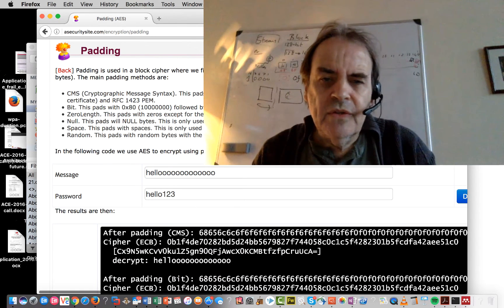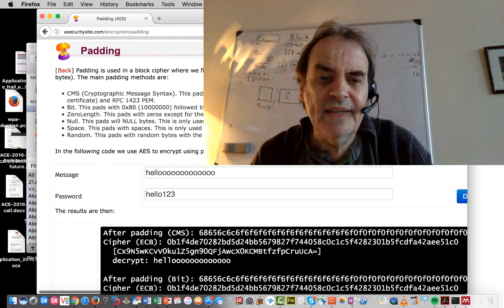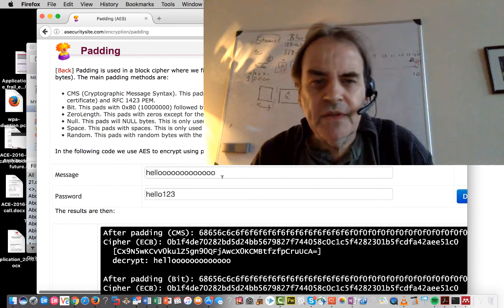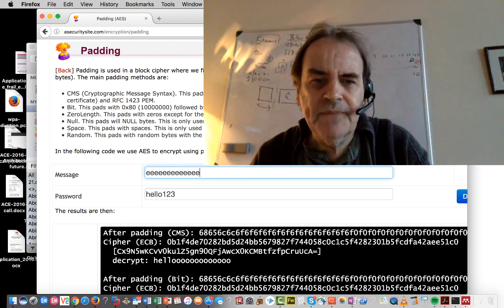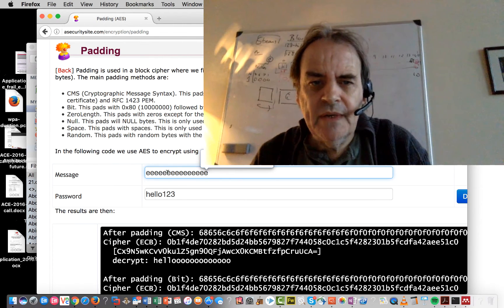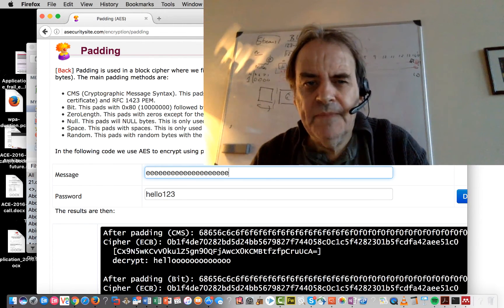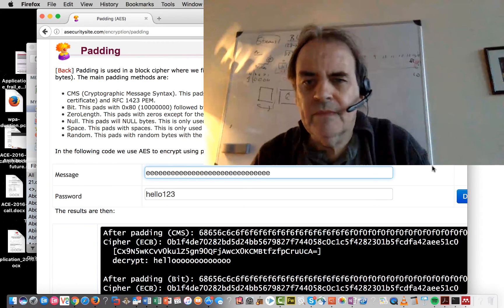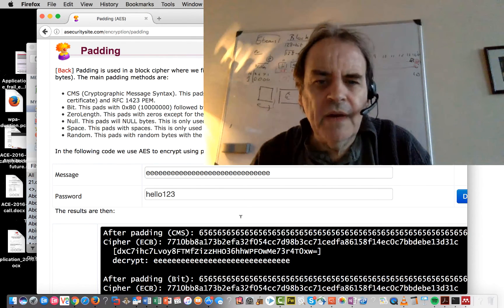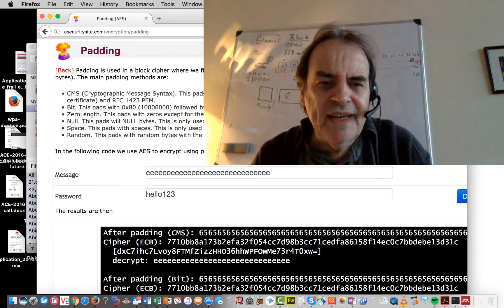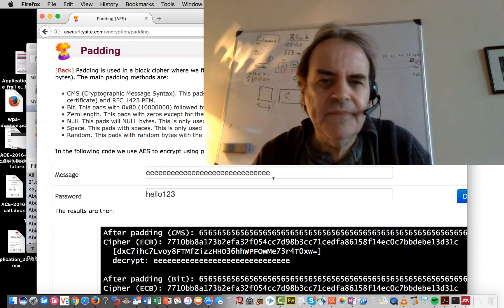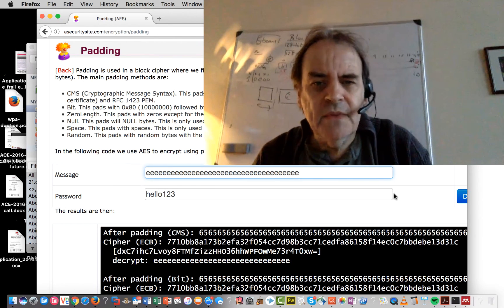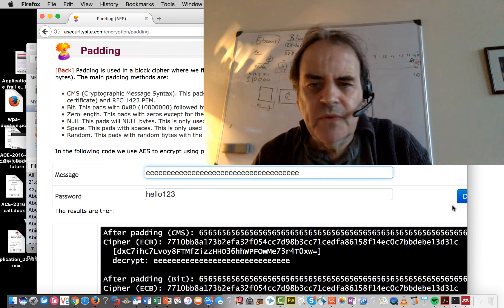Okay, so the intruder could see the message coming through with size. The problem that we have with electronic codebook if we just put in lots of E's here. The problem that we have with electronic codebook is that it actually will repeat as we process it.